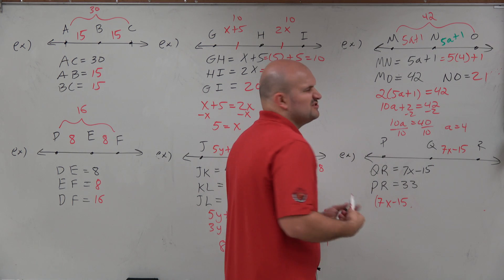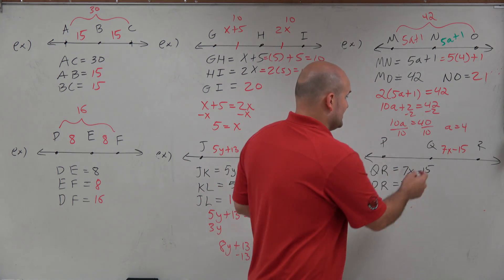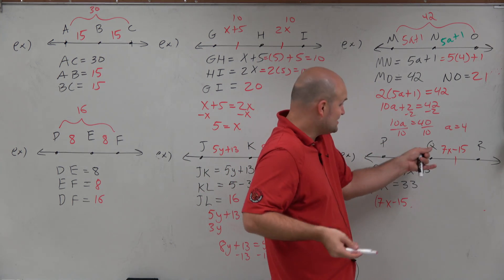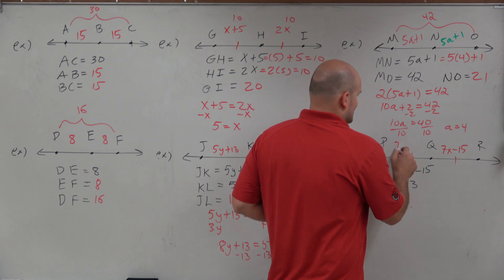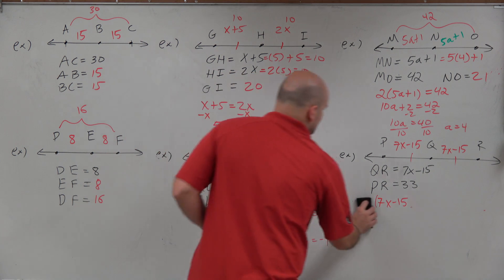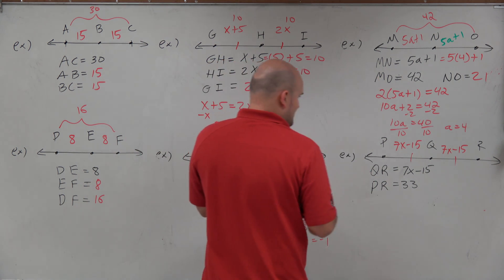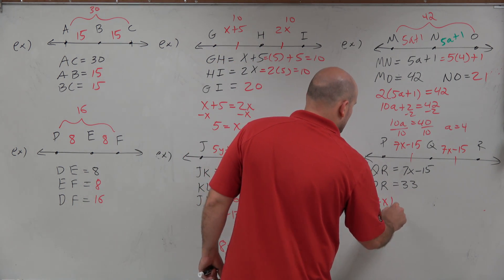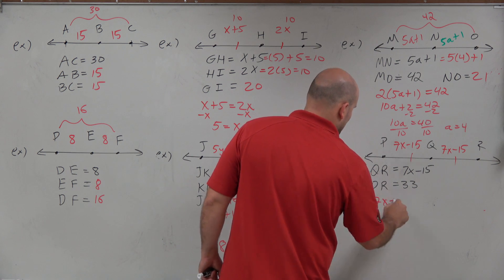So if here's 7x minus 15, since these are the same, right, since Q is the midpoint, that means that 7x minus 15 is over here as well. So I'm going to write this one out the long way, just so you can see. You can do it multiply by 2. But if that didn't make sense to you, hopefully this way does.